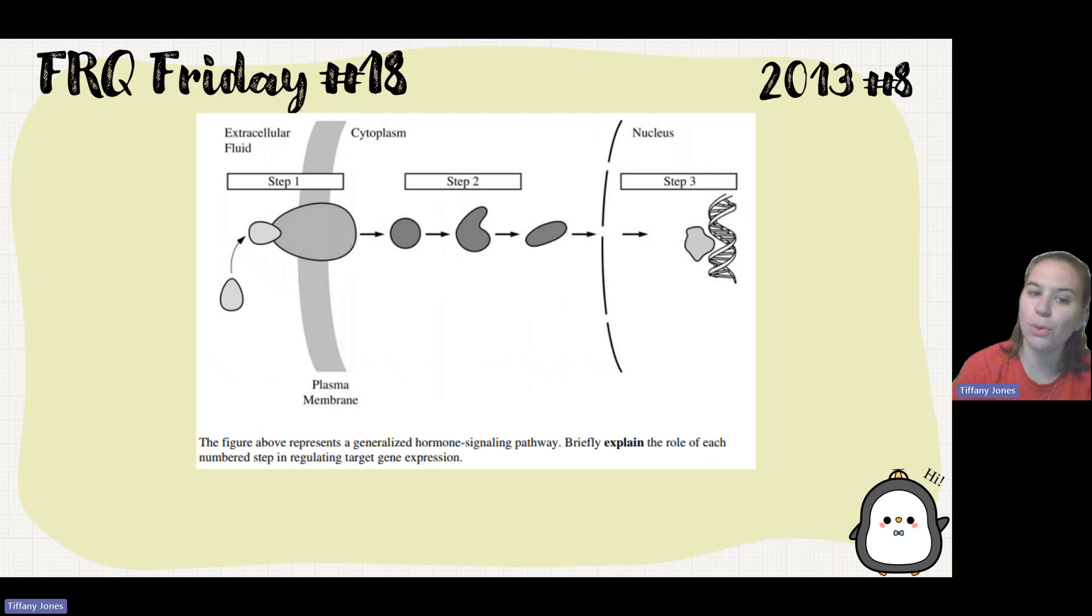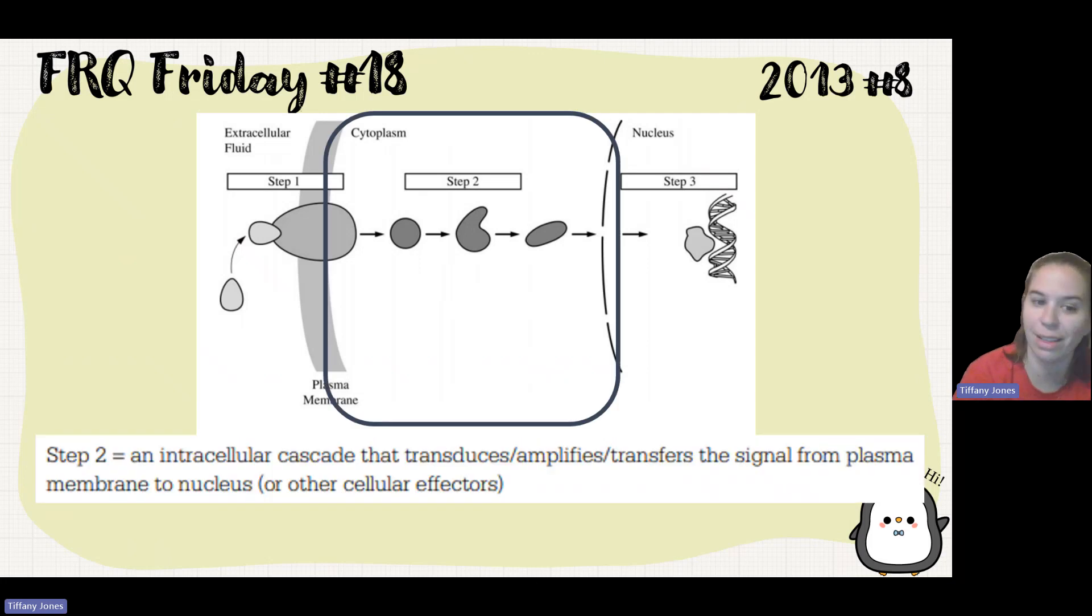So step two is talking about that I've got transduction. Okay, so I see that there is a conformational shape change occurring between our relay molecules which is gonna transfer the message from step one to step three. And this can also amplify the signal and it can also regulate the signal. So step two, an intracellular cascade that induces, amplifies, transfers the signal from plasma membrane to the nucleus or other cellular effectors. And they were saying specifically nucleus because you can see the nucleus is labeled.